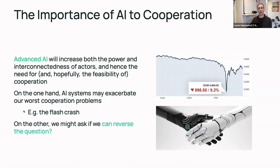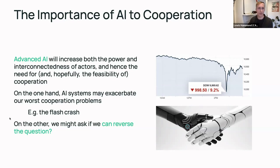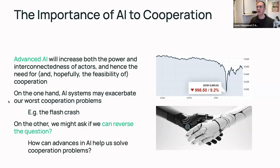But on the other hand — the more positive framing — we might ask if we can reverse this question. Humans are okay at cooperating, we do it in a bunch of places, but it's fair to say we could be better. We use AI tools all the time to help us with various things, so the question is whether we might be able to use AI to actually help us cooperate better as well.